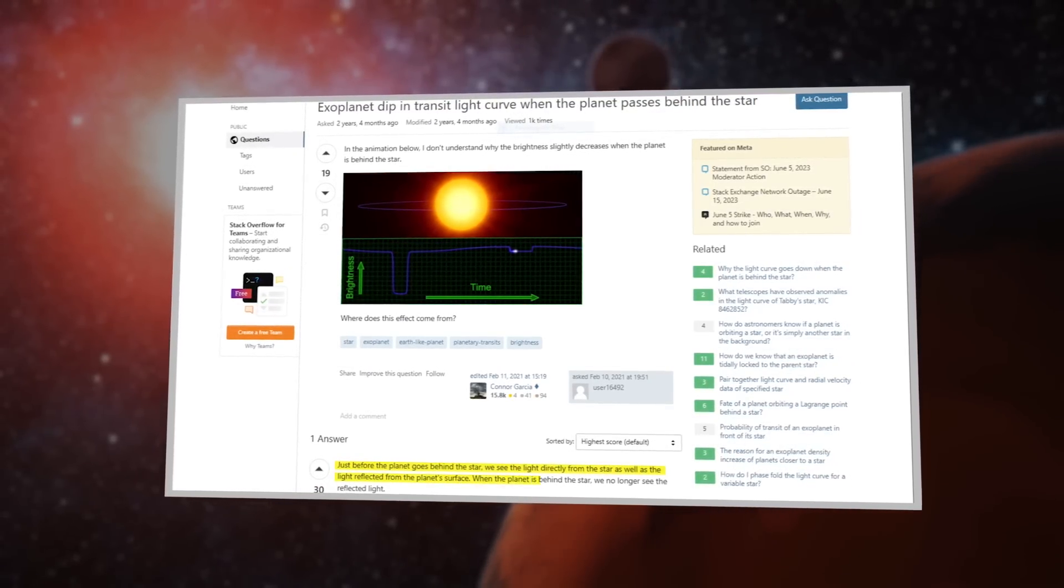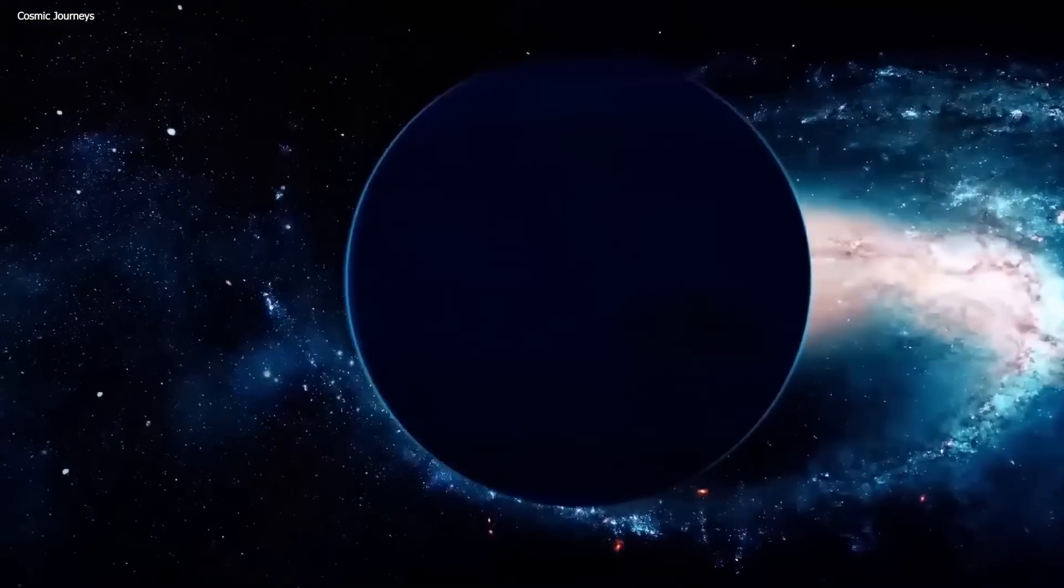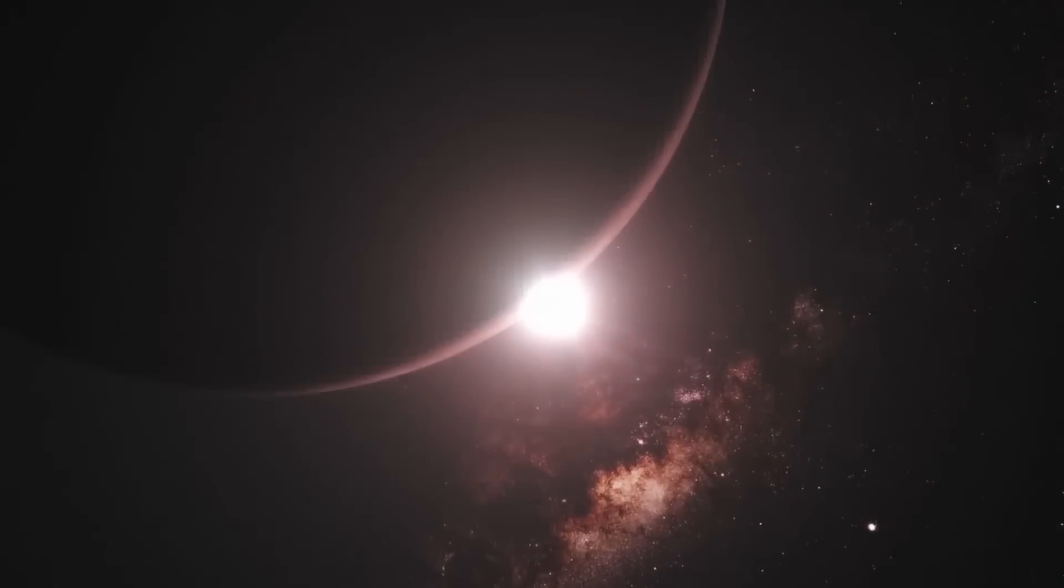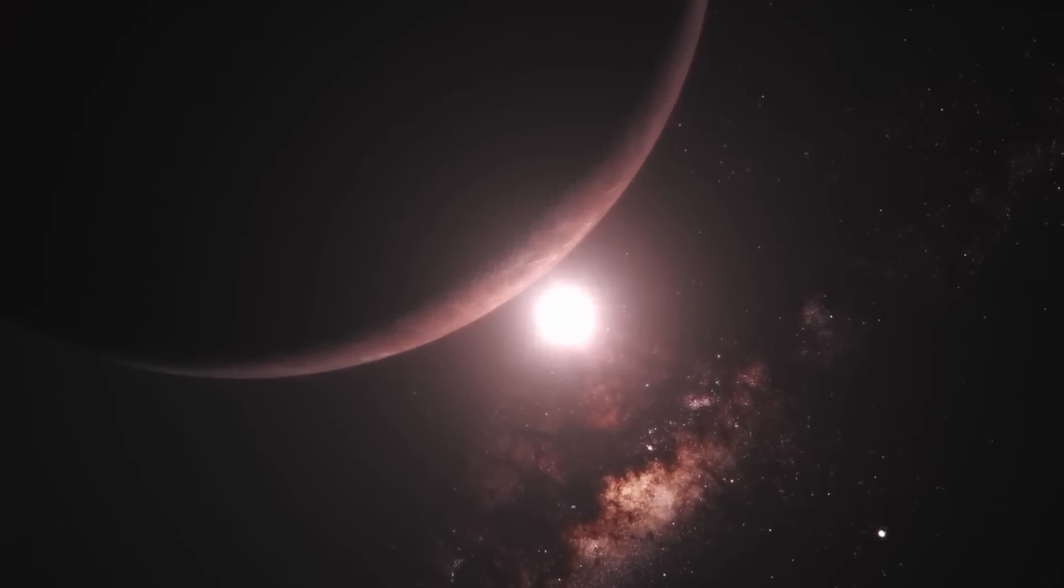And when the planet moves to the other side of the star, the brightness increases again. This happens regularly because the planet is orbiting around the star. By closely observing this pattern, we can infer that the changes in brightness are caused by the planet's movement.